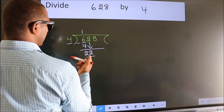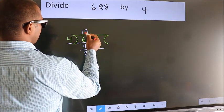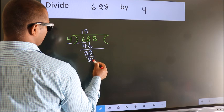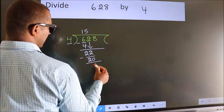A number close to 22 in 4 table is 4 fives 20. Now, we subtract. We get 2.